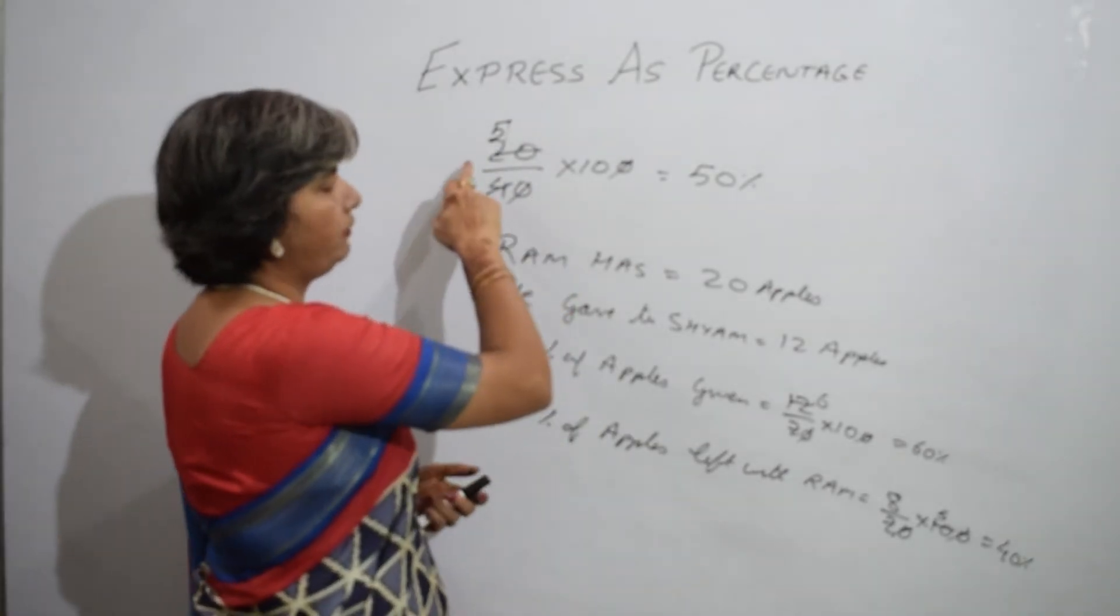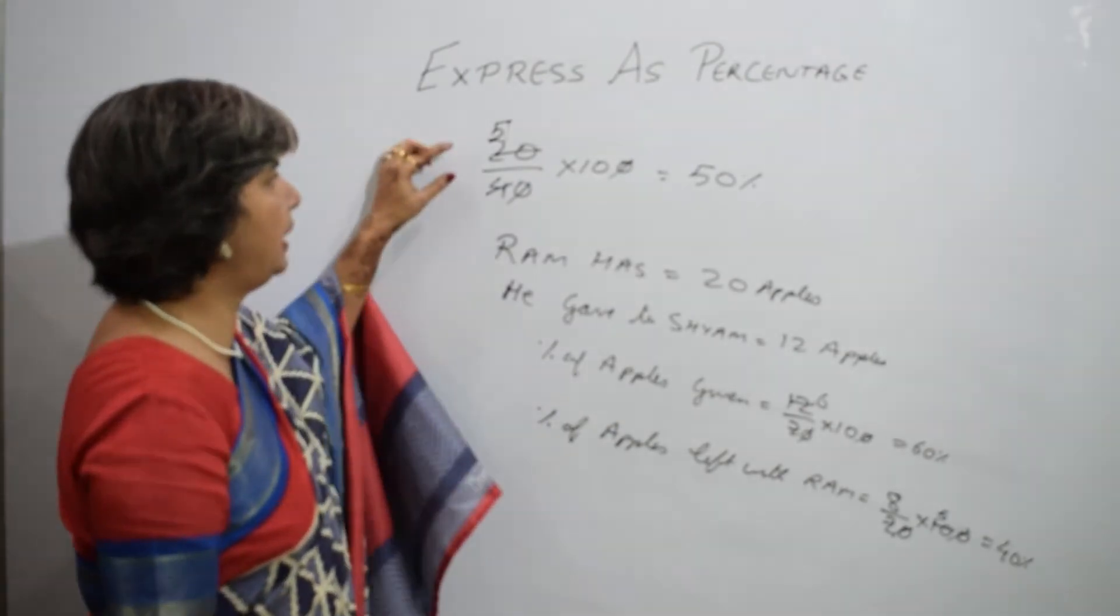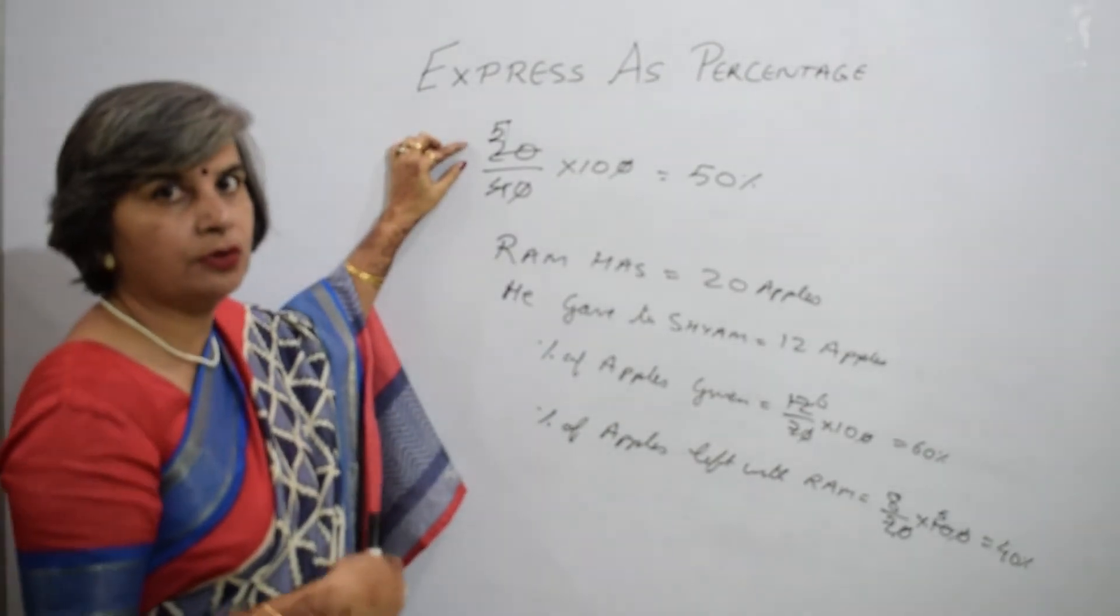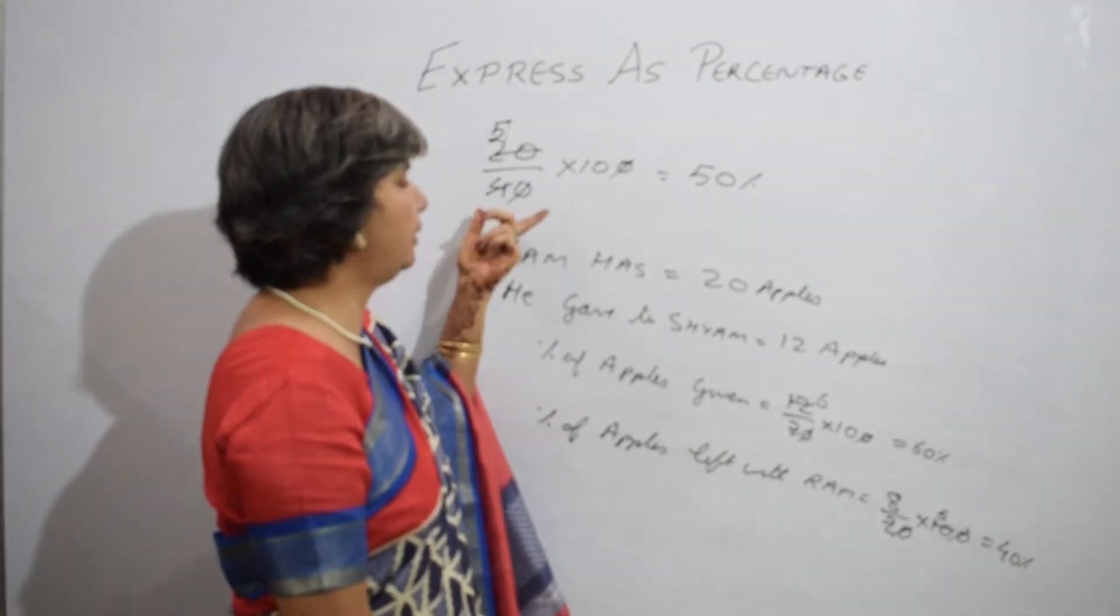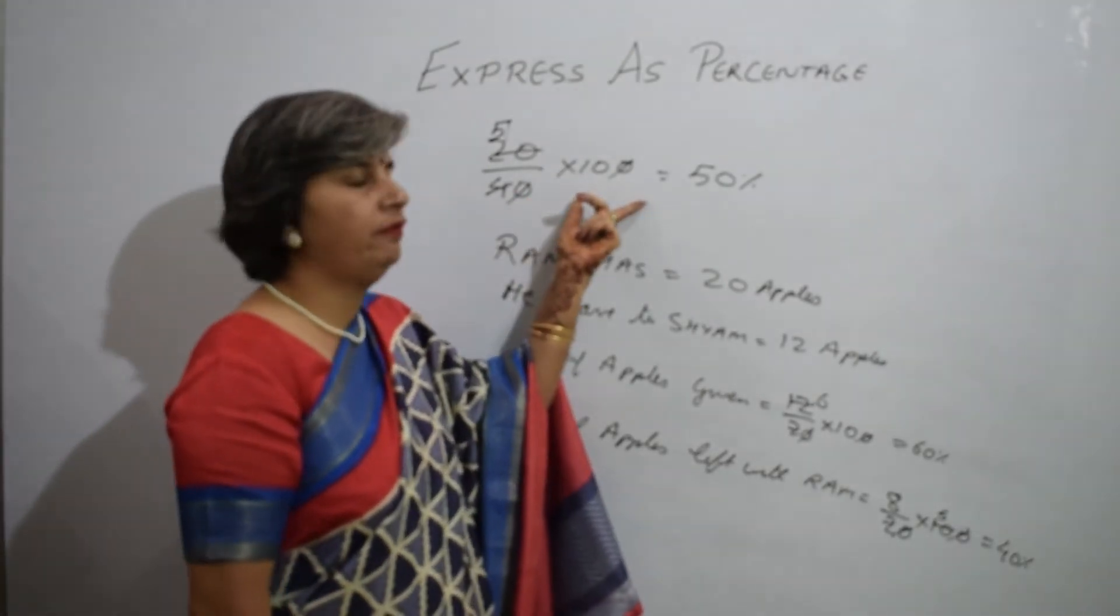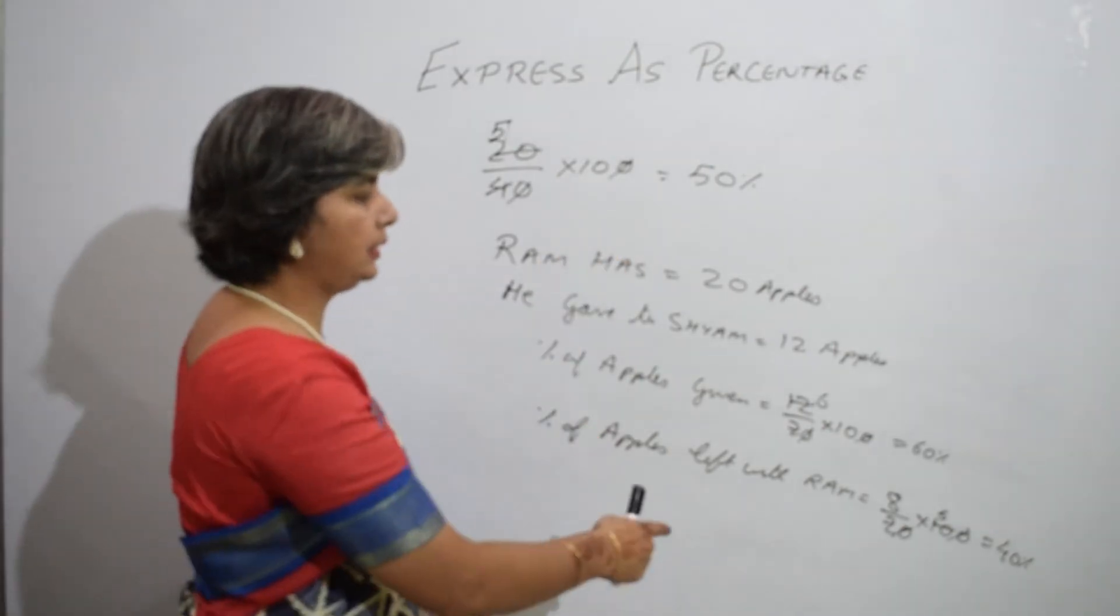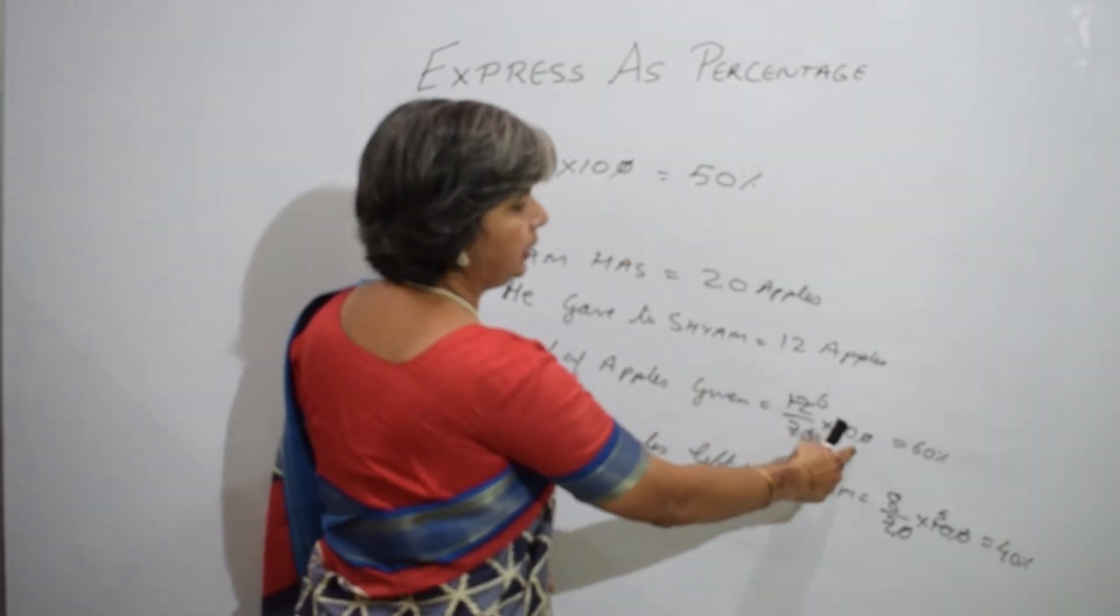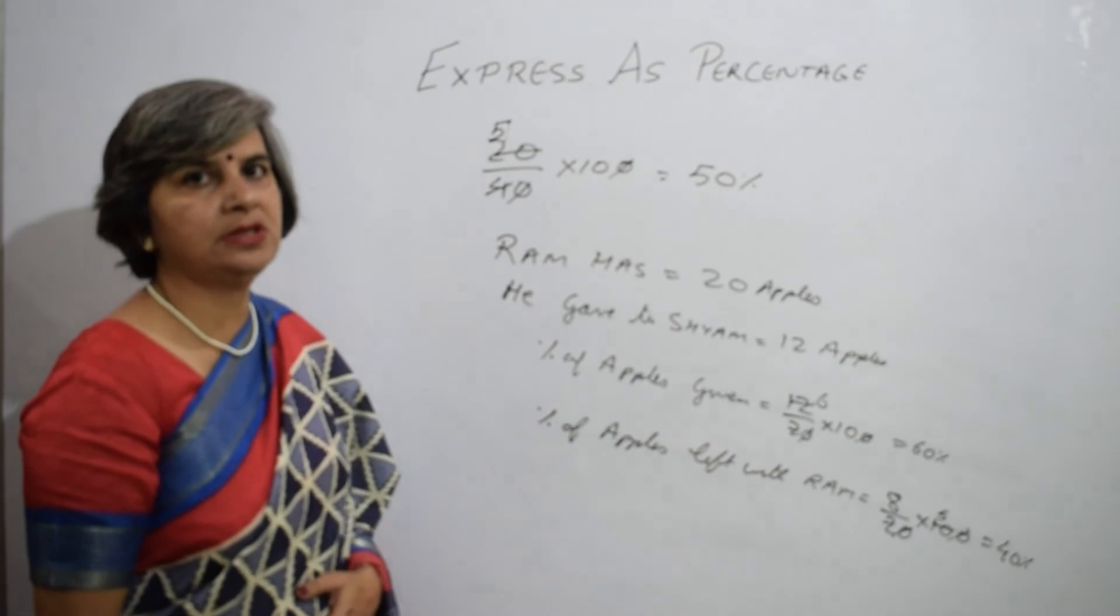So, for every case, we will find what we will take. We will have the value for whose percentage I have to find and the denominator will be the value from which we have to find and we will multiply it with 100, as in the case 12 upon 20 into 100 that means 60 percent.